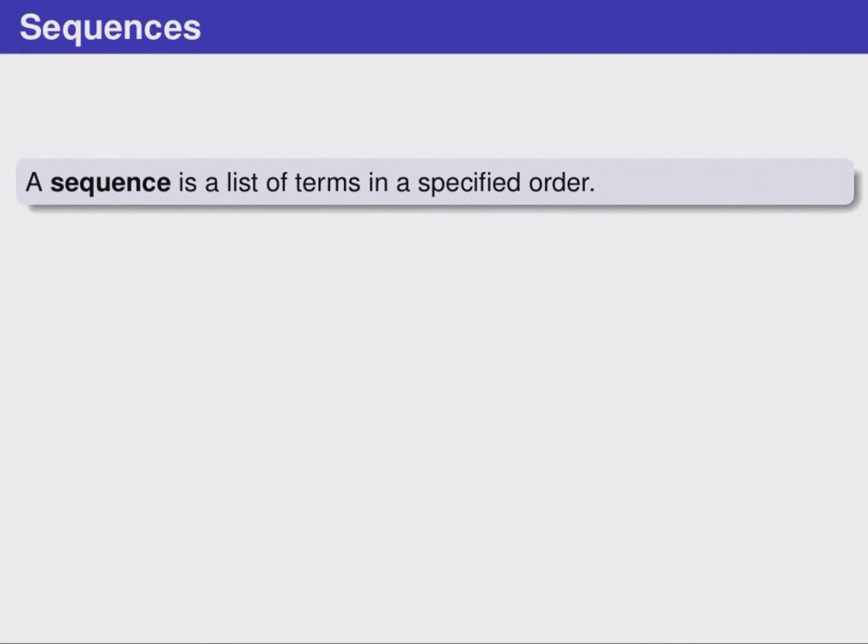A sequence is just a name for a list of terms in a specified order. By terms, we usually mean numbers. For example, here's a sequence: 1, 4, 9, 16, 25, and so on. The dots here indicate that this sequence continues on in the same way forever. Sequences are often infinitely long.